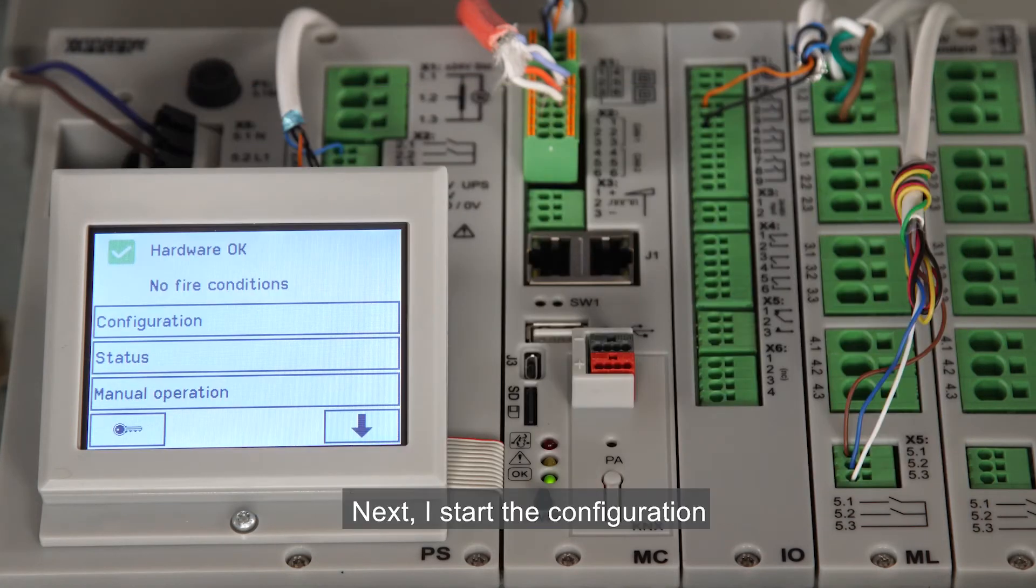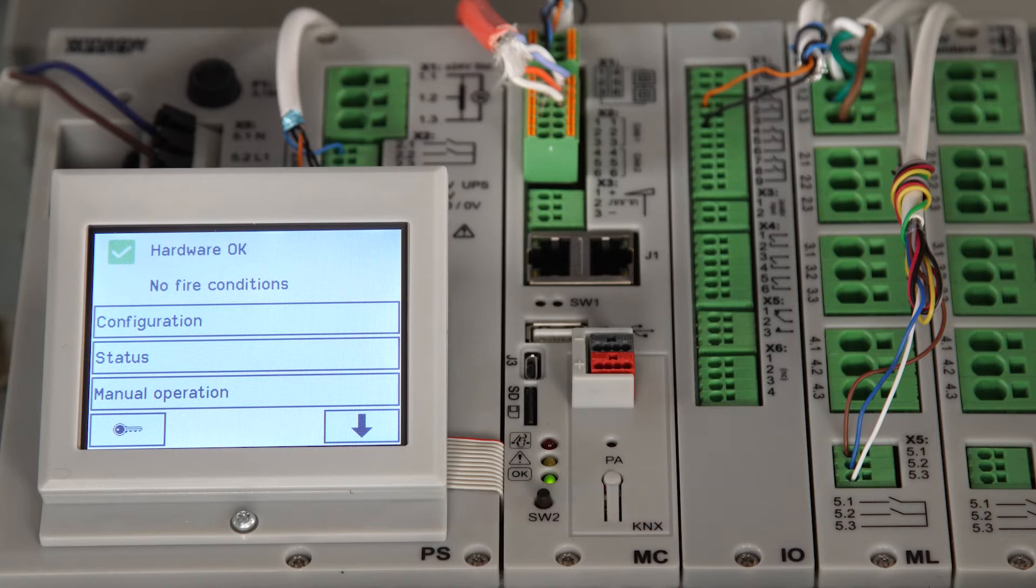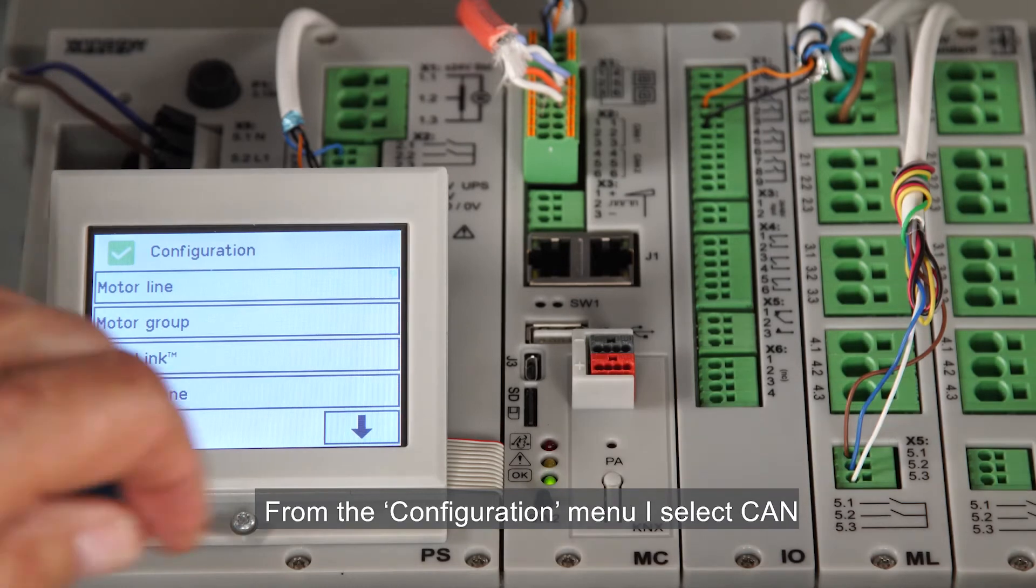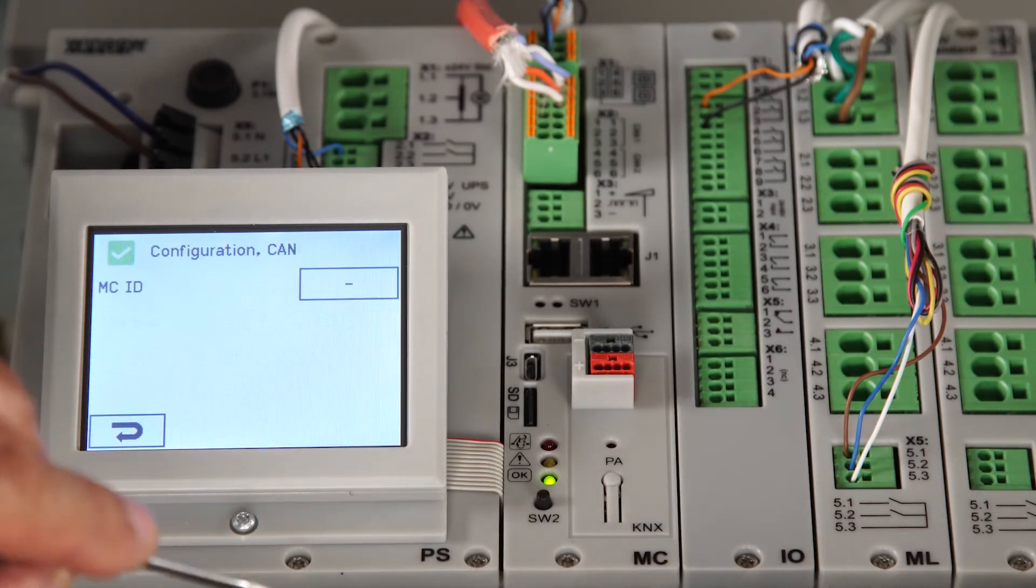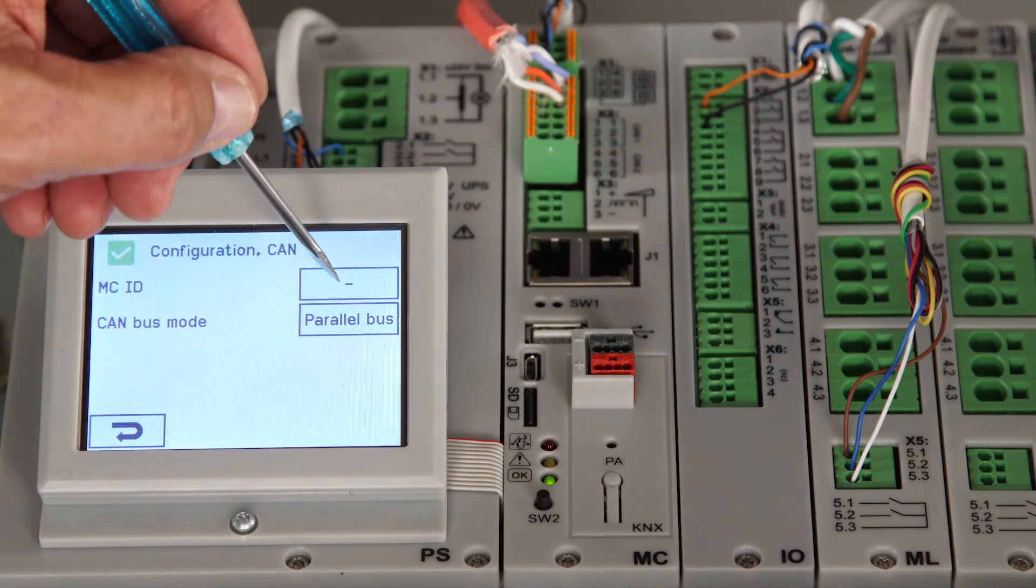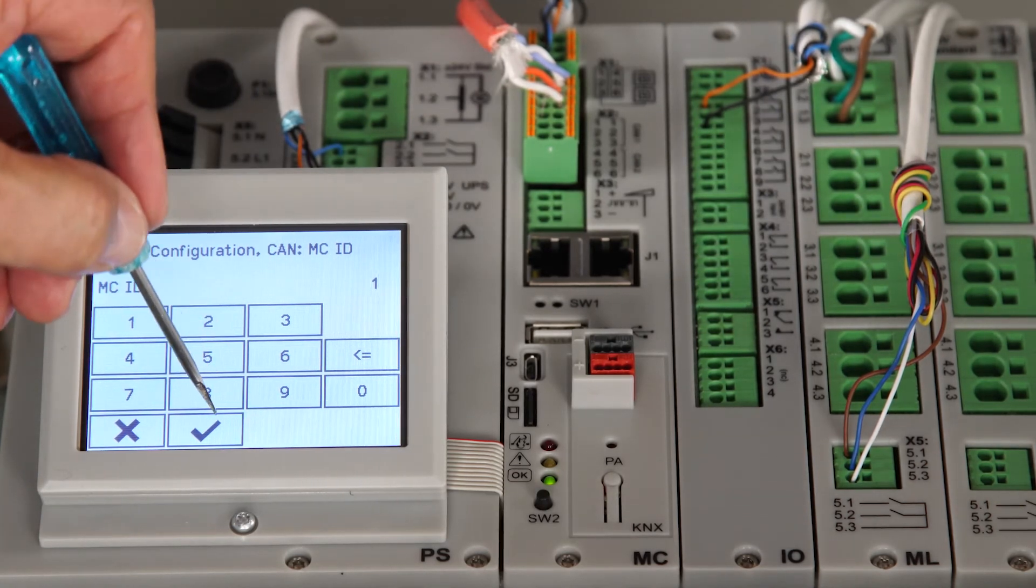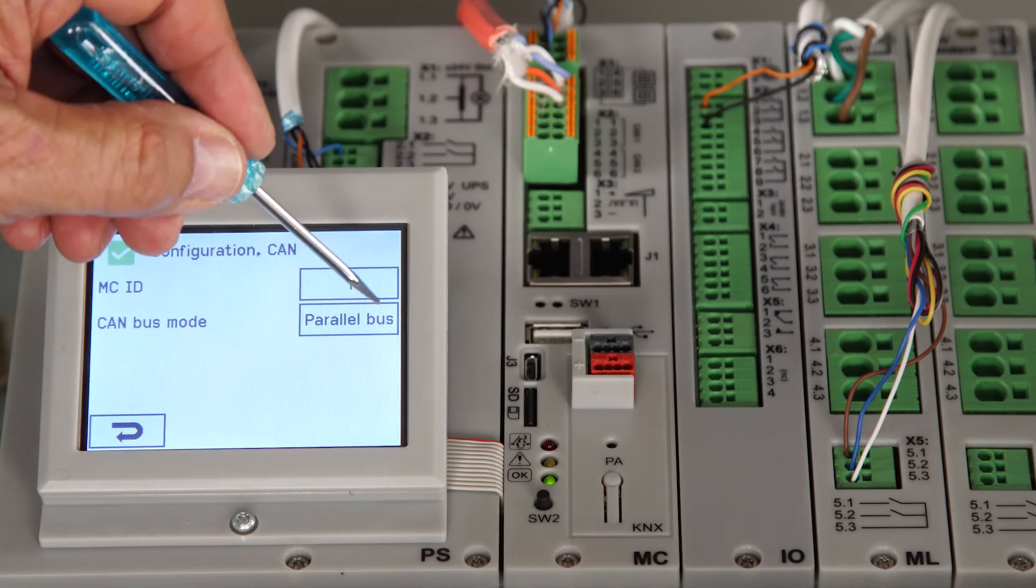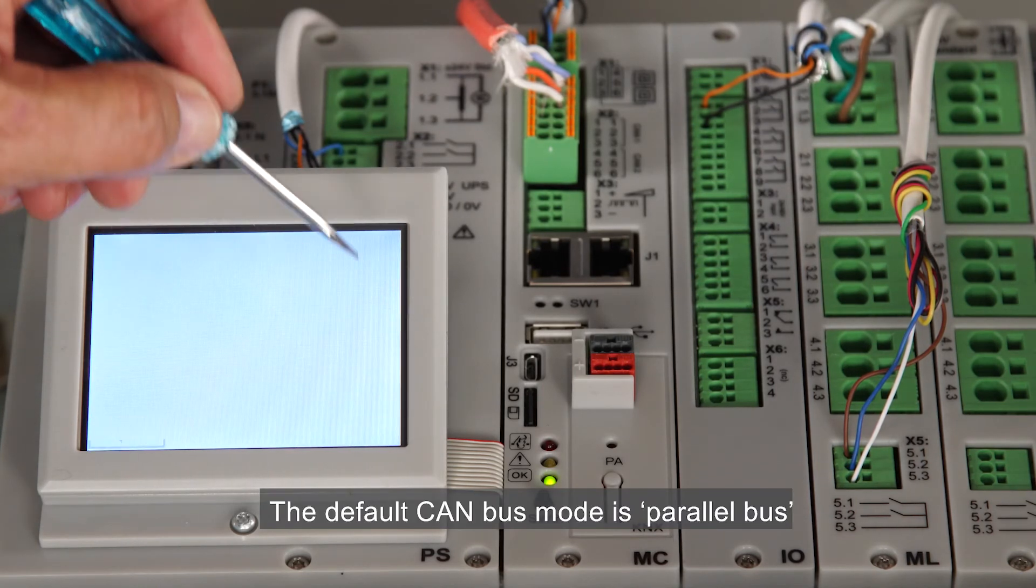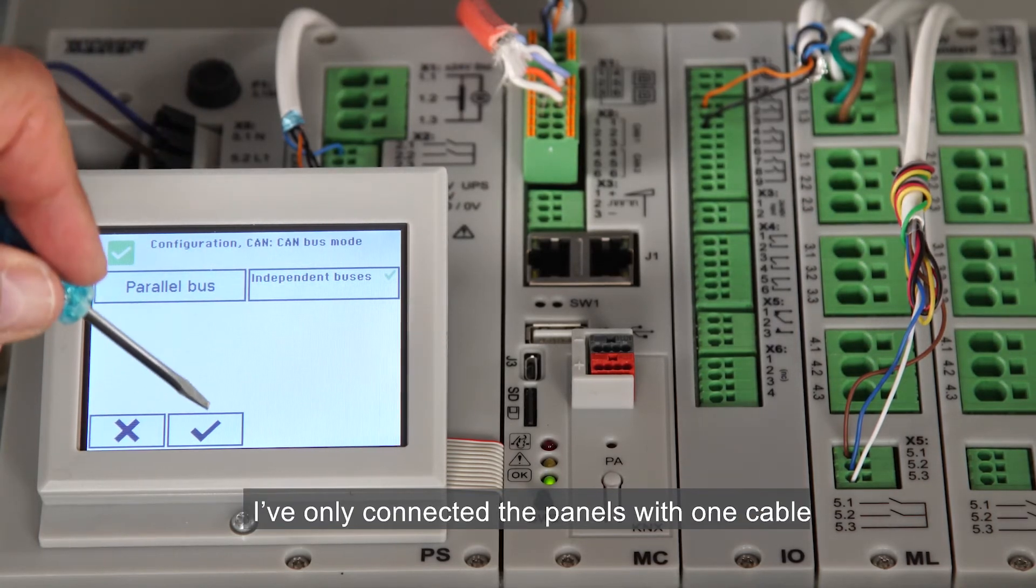Next, I start the configuration. The first thing to do is to assign CAN bus IDs to the panels. I do it first on the master panel. From the configuration menu, I select CAN and I'll insert an ID. The default CAN bus mode is parallel bus, which I need to change because I've only connected the panels with one cable.